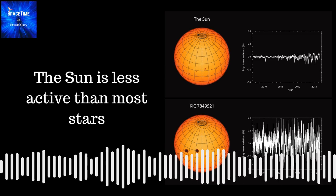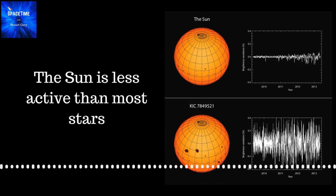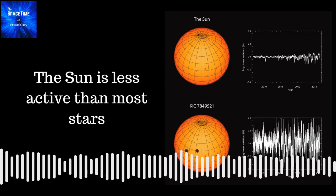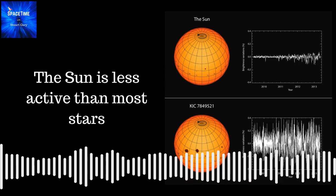While active and inactive phases of solar radiance fluctuated on average by just 0.07%, the other stars showed much larger variations, averaging about five times stronger.